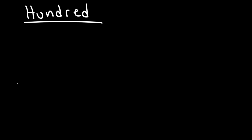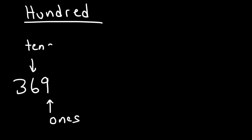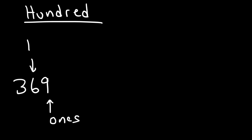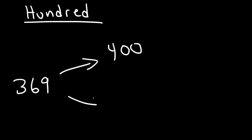But what if we wanted to round to the nearest hundred? So let's start with an example. Let's say we have 369 — round it to the nearest hundred. This is the ones digit, this is the tens digit, and here is the hundreds digit. We need to either keep it a three or round up to a four, and everything after that will be a zero. So either we round it up to 400 or round it down to 300. Looking at the next number — it's a six, so that's five or more, which means we're going to round up to 400.